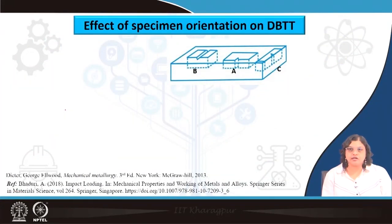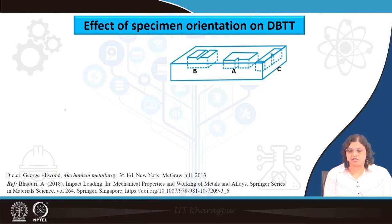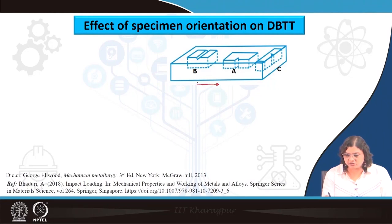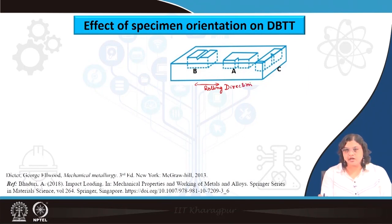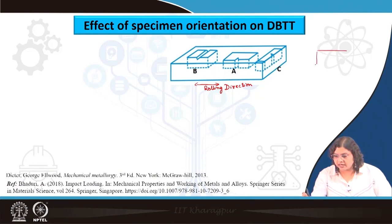Another important factor that affects DBTT and shows anisotropy in behavior is specimen orientation. This example shows a rectangular billet or structure which has been rolled along a particular direction — the rolling direction. When we have a rolled structure, all grain structure, microstructural parameters, inclusions, or any kind of defect will be aligned along the rolling direction, resulting in elongated or sausage-shaped grains, which signifies that rolling has been performed along that direction.